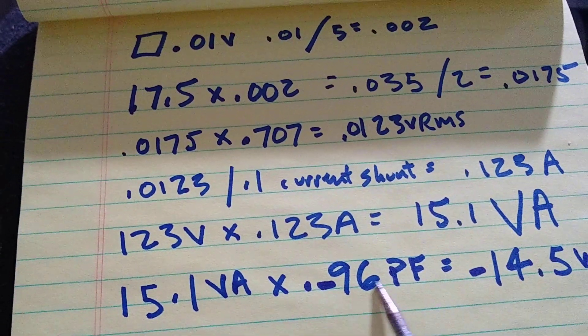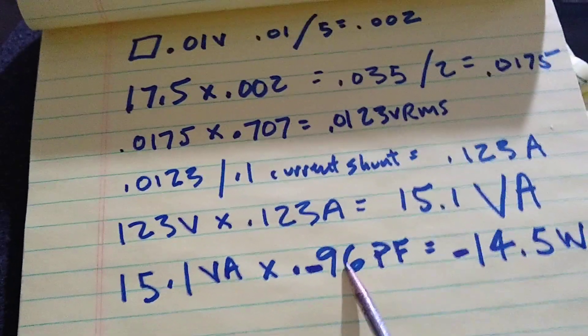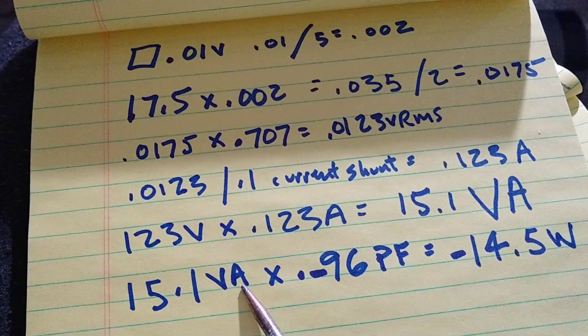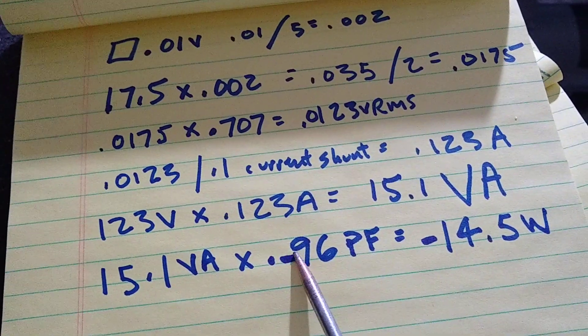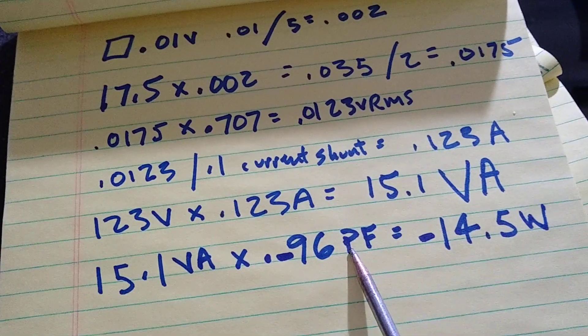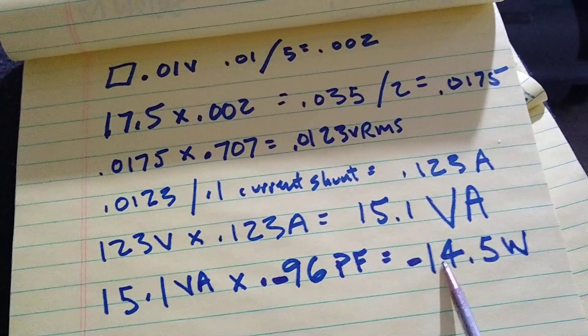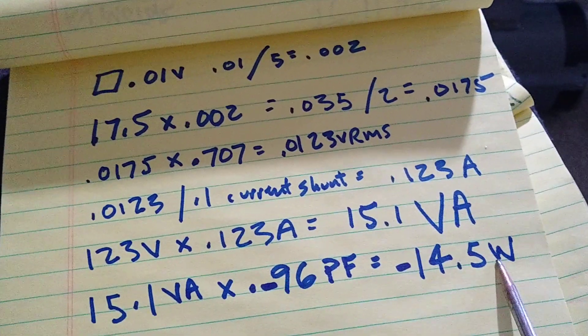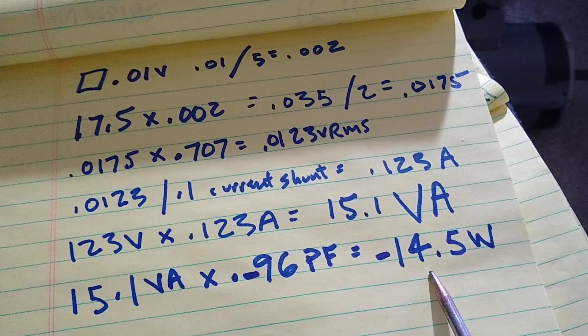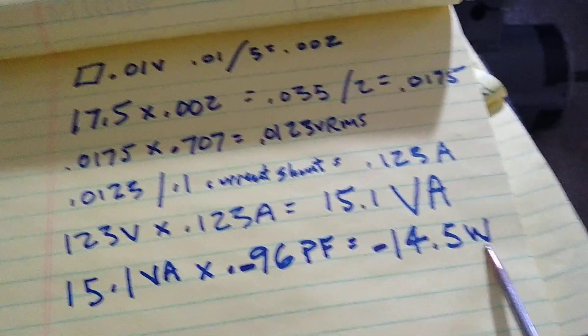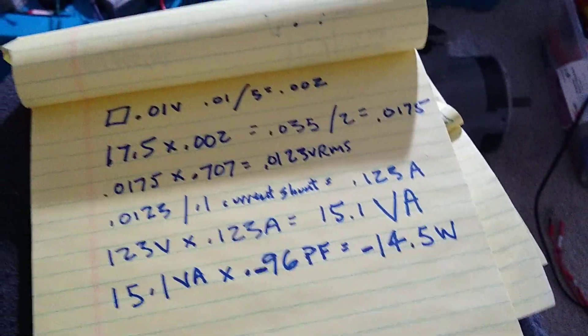To get the watts, you times it by the power factor. And the power factor is a negative number because it's over 90 degrees. So 15.1 times negative 0.96 is negative 14.5 watts. That means it's returning 14 and a half watts to the source. So that's what it is running this rotaverter motor.